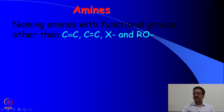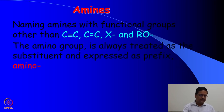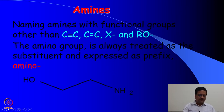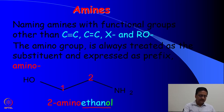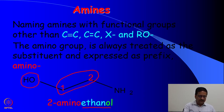When you have multiple functional groups, amines can be named with functional groups other than C≡C, C=C double bond, halogen, and alkoxy groups. The amino group is then treated as a substituent expressed as a prefix 'amino.' When a molecule has two functional groups — for example OH and NH₂ — OH has higher priority. So the compound is named as ethanol, and at the 2-position you have the amine group, making it 2-aminoethanol.